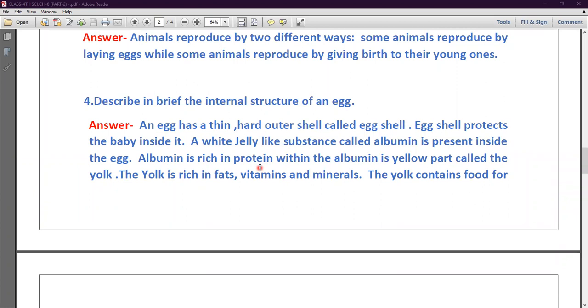Albumin is rich in protein and within the albumin is yellow part called the yolk. The yolk is rich in fat, vitamins and minerals, and the yolk contains food for the embryo.